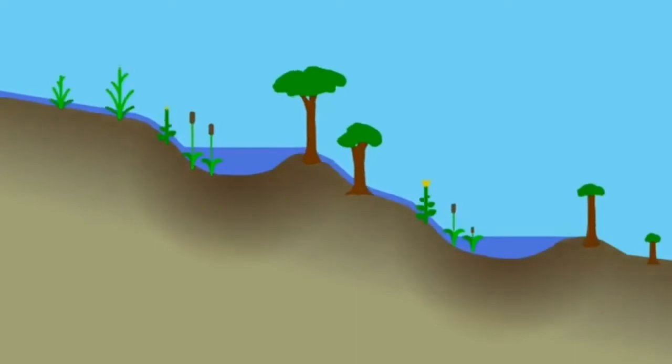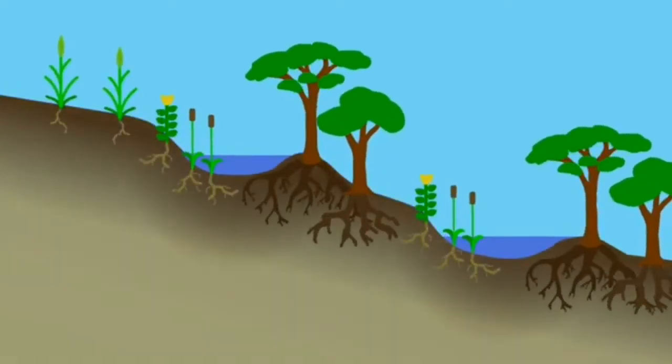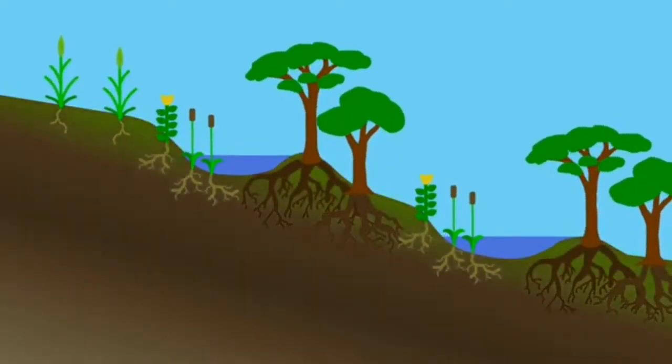Making subtle changes to the land's topography can slow the flow of water, allowing more of it to soak into the ground and be used by plants. Plants with deep roots help break up the compacted soil, allowing water to percolate deeper.